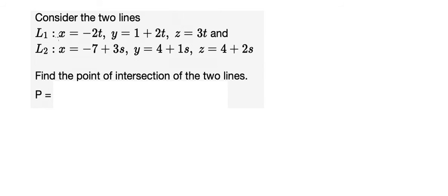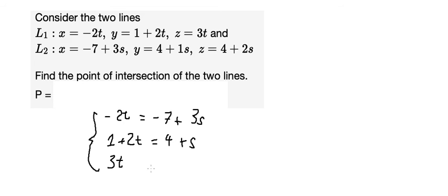That means we will have negative 2t is equal to negative 7 plus 3s, 1 plus 2t is equal to 4 plus s, and 3t is equal to 4 plus 2s.